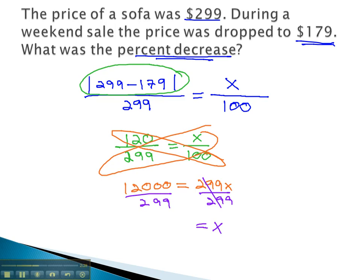On our calculator, we get 40.13, or 40.13 percent is the percent decrease from 299 down to 179.